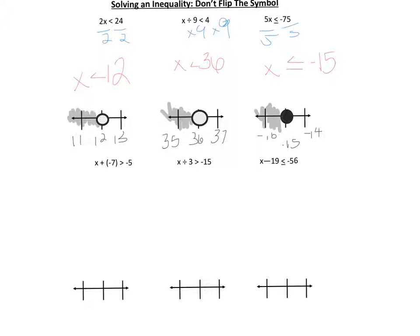Next: x plus negative 7 is greater than negative 5. We make a zero pair with negative 7 by adding 7. Negative 5 plus 7 — the signs are different, so we subtract: 7 minus 5 is 2, and the larger absolute value is 7 and it's positive, so our answer is x is greater than 2. We put an open circle at 2 and shade everything to the right.